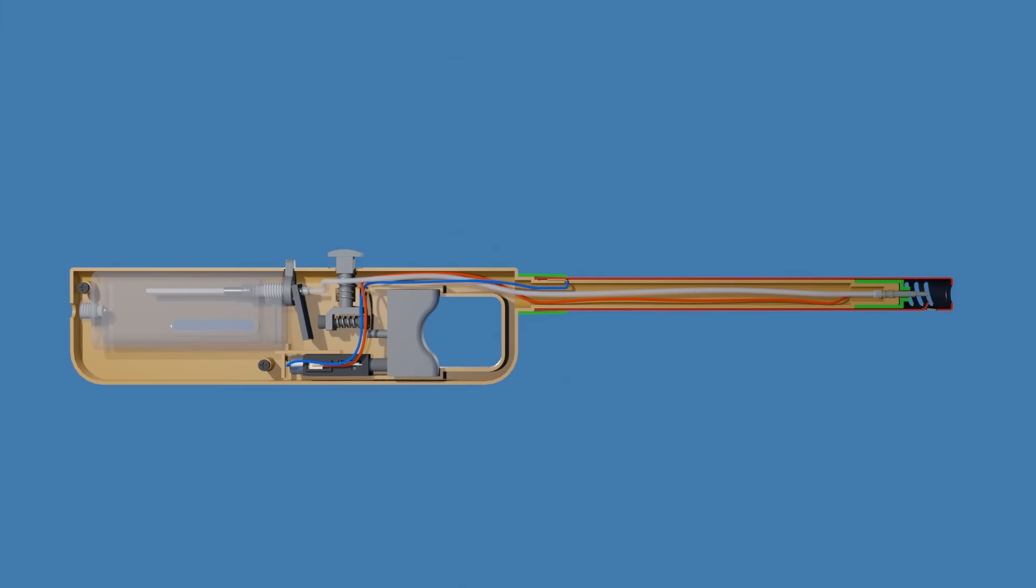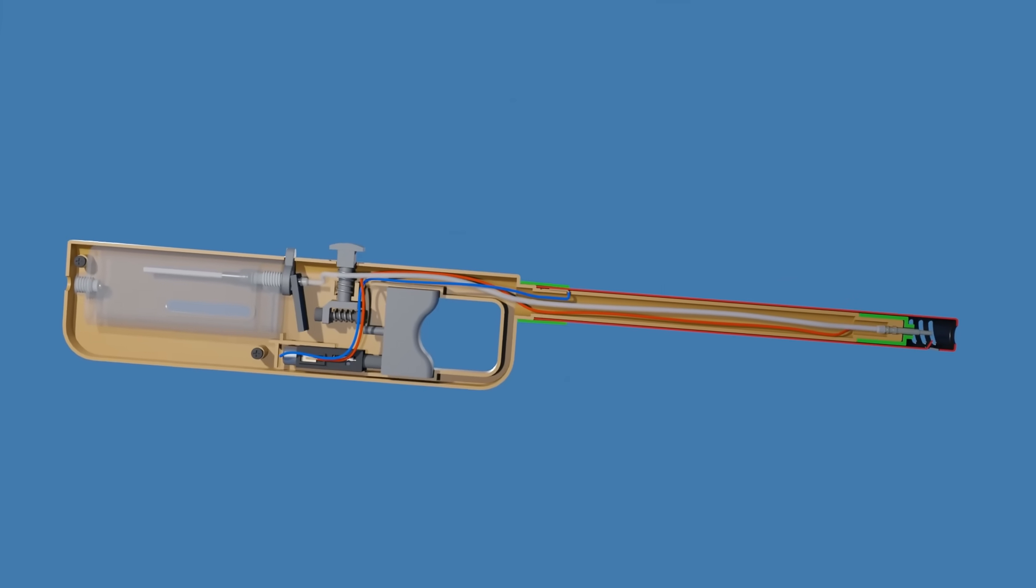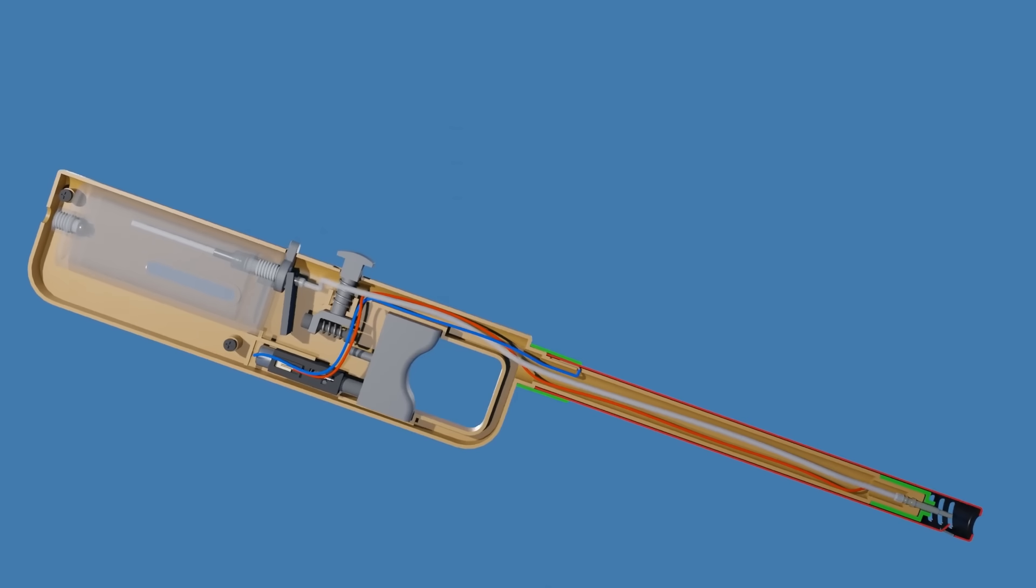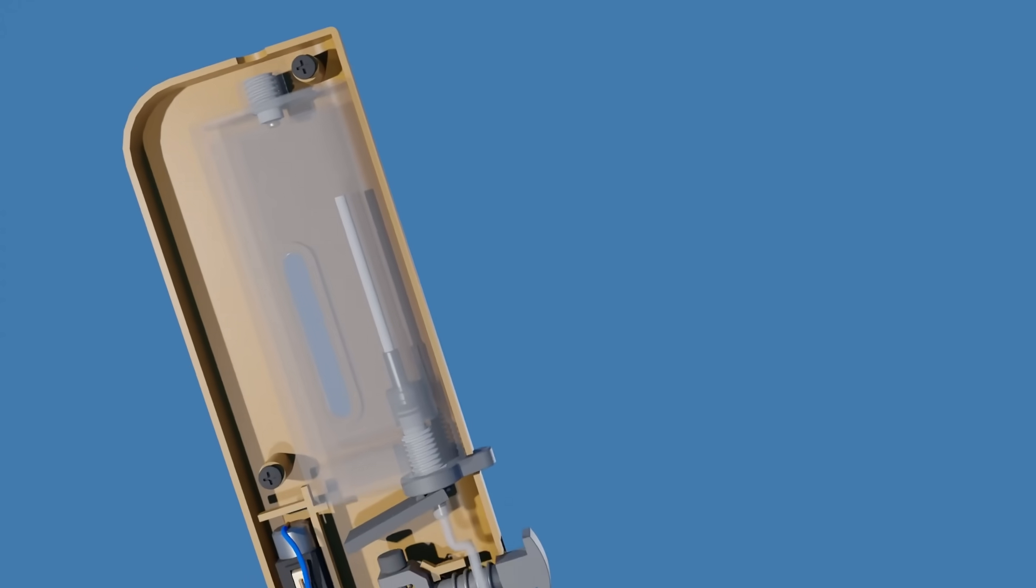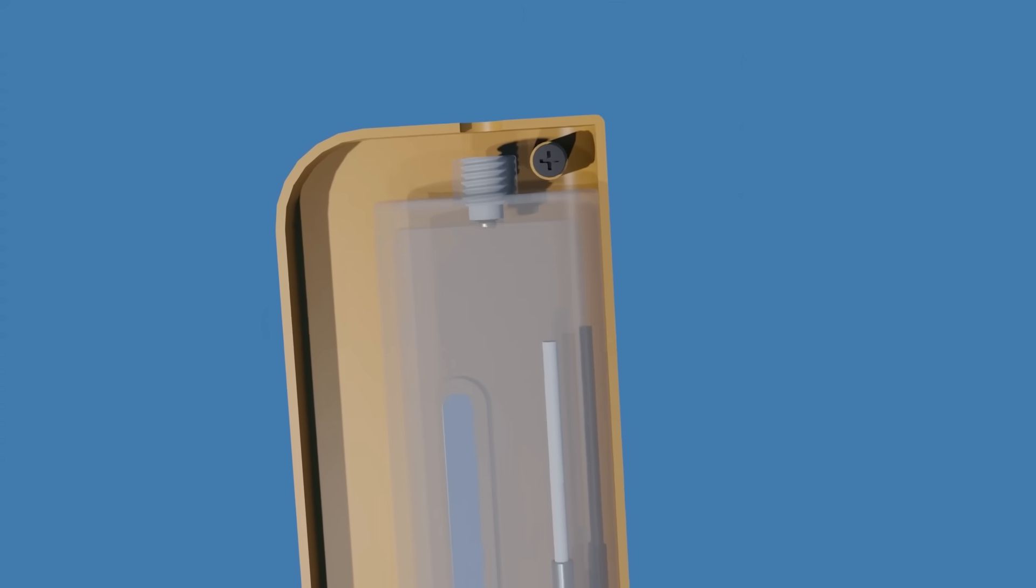To refill the lighter with butane, flip the lighter upside down. This ensures that liquid butane rather than gas flows from the refill canister into the lighter's reservoir, allowing for a proper and efficient refill.